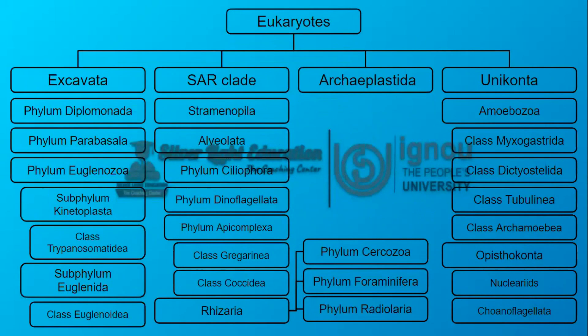Now see this chart — here you can clearly see the classification of Protista. Protista are eukaryotes and these eukaryotes are divided into four supergroups: Excavata, Sarclate, Archaeoplastida, and Unikonta. These supergroups are further divided. Let's study one by one. Before this, take a screenshot of this chart or note it down.